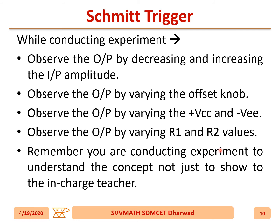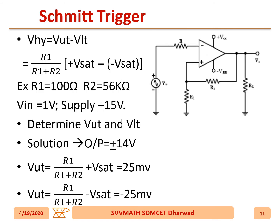Remember, you are conducting the experiment to understand the concept, not just to show the output to the lab in-charge. For the Schmitt trigger, V_hysteresis equals V_UT minus V_LT. Example: R1 = 100 Ω, R2 = 56 kΩ, V_in = 1 V, supply = ±15 V. Determine V_UT and V_LT. With ±V_sat ≈ ±14 V, you get V_UT = +25 mV and V_LT = −25 mV respectively.